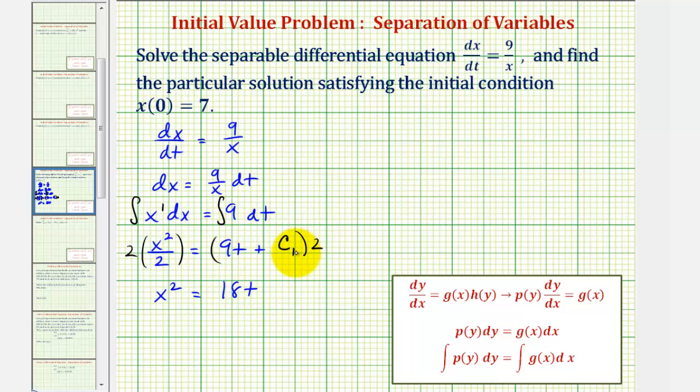And then we'd have plus 2 times c₁, but 2 times c₁ is just another constant. So let's let c equal 2 times c₁, so we can just write plus c.